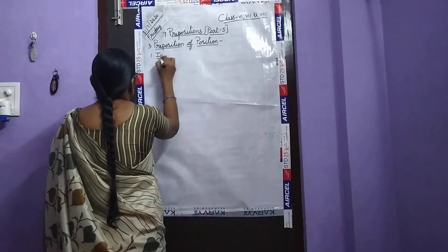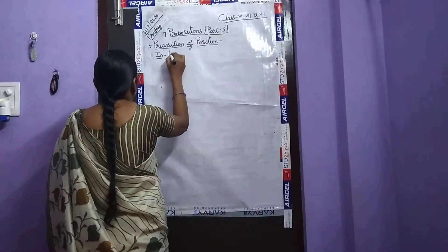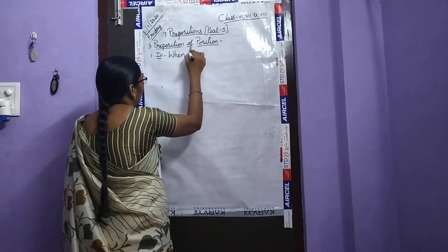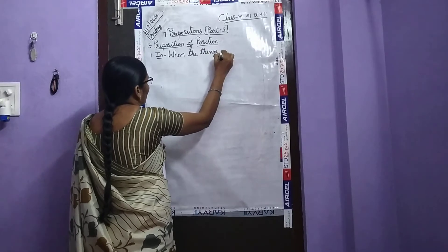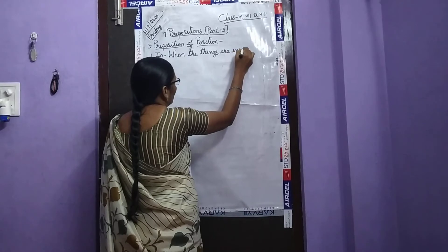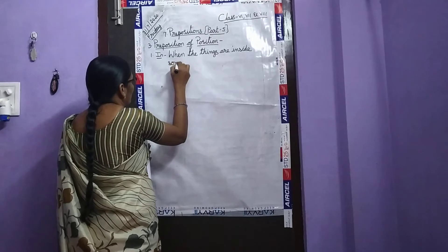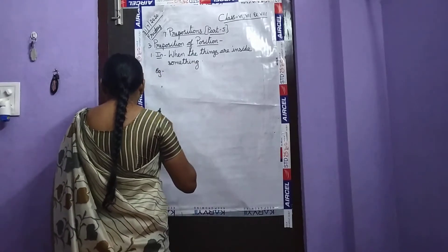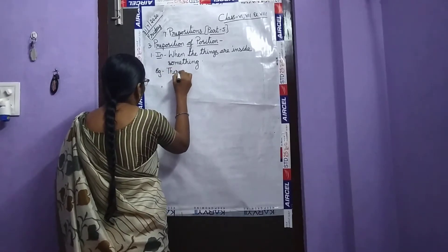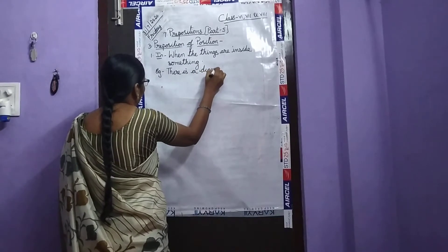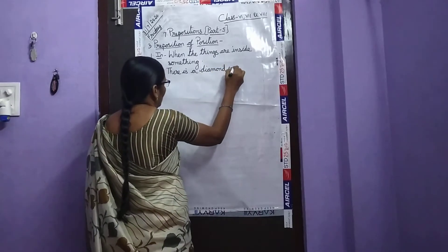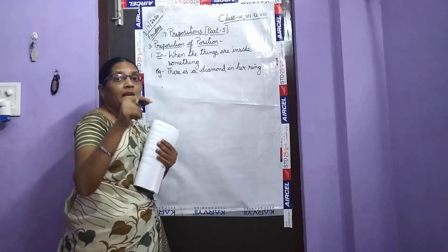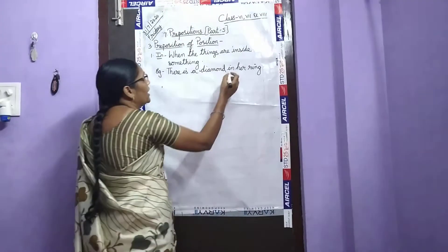The first preposition of position is 'in.' Where do we use 'in'? When the things are inside something. For example: there is a diamond in her ring. What is there in her ring? A diamond is there. And where is the diamond? It is placed in the ring.